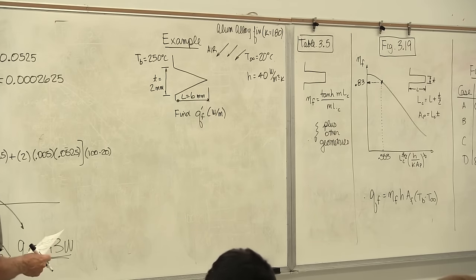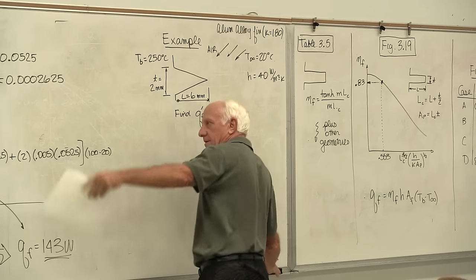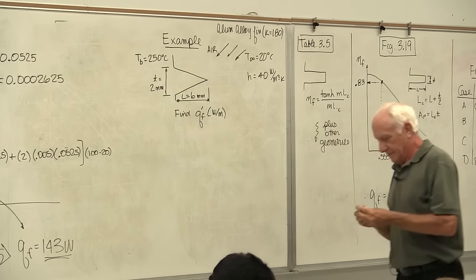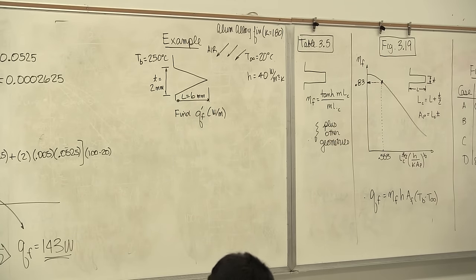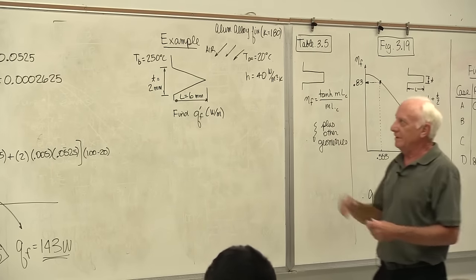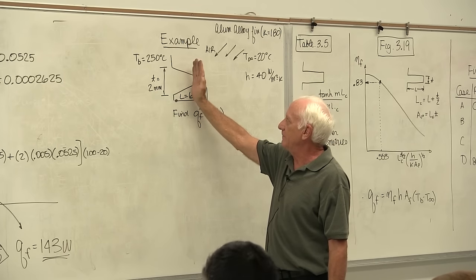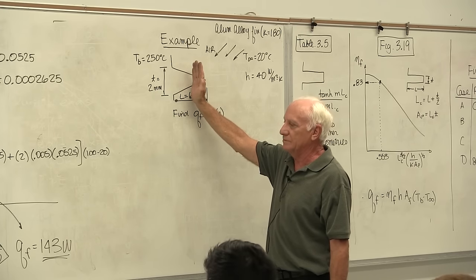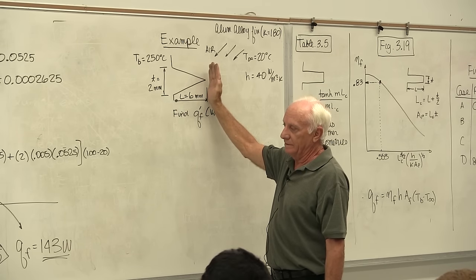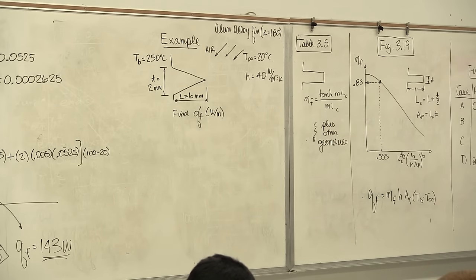Can we use Table 3-4? No — at the base the cross-section is large, at the middle it's smaller, near the tip it's nearly zero. The cross-sectional area is not uniform, so Table 3-4 does not apply. Moving on to Table 3-5 and Figure 3-19 — Figure 3-19 has a second line for the triangular fin.